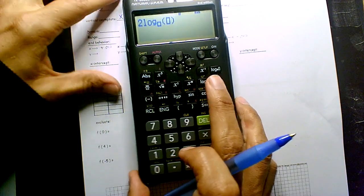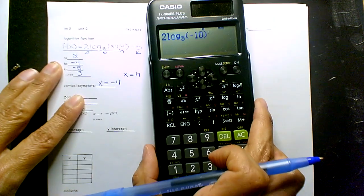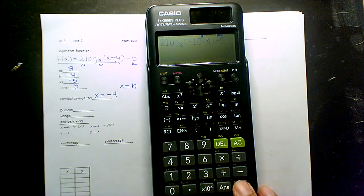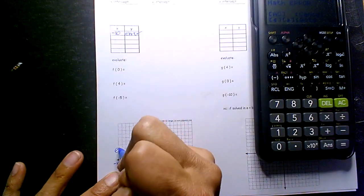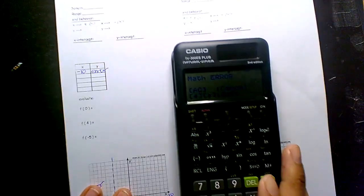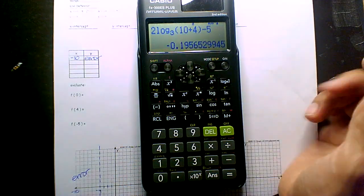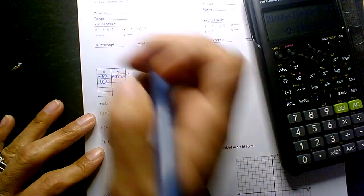If I type that in to log base 3 and say I type in negative 10 — plus 4, negative 5 — I get error. So I plugged in negative 10 and I get error. So that means over here is my error, and that's because my vertical asymptote is at negative 4. So then if I plug in positive 10, I get negative 0.2. So if I substitute positive 10, I get negative 0.2.